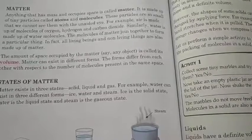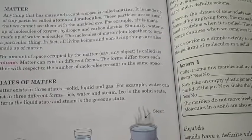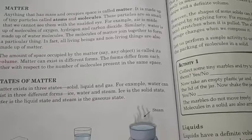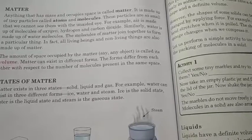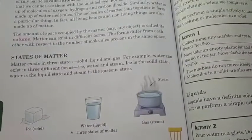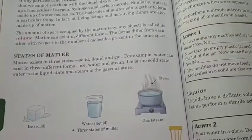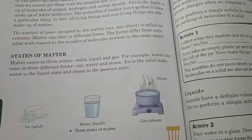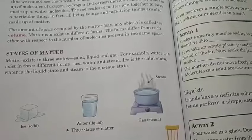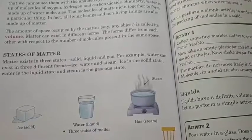States of matter. Matter exists in three states: solid, liquid and gas. For example, water can exist in three different forms: ice, water and steam. Ice is the solid state, water is the liquid state, and steam is the gaseous state. States कितने form के होते हैं? Three forms: solid, liquid and gas. जैसे कि water, ice के form में, liquid form में पानी, और gas के form में भाप के form में.